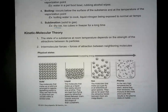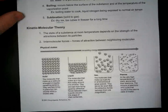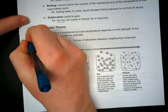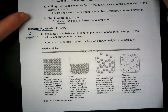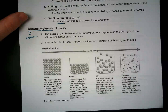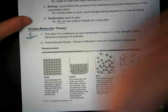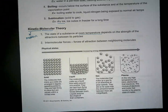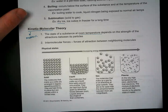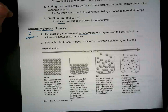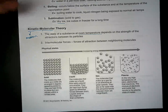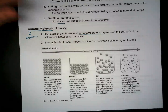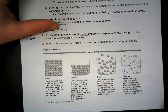The last couple of things to go over is the kinetic molecular theory. Kinetic means motion, molecular means molecule or particle. What this states is that the state of a substance at room temperature depends on the strength of the attraction between the particles. The intermolecular forces — the forces of attraction between neighboring molecules — determine the state of matter based on how much energy is working between them. This plays into how we can have these phase changes.